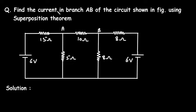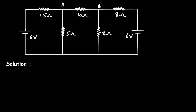Find the current in branch AB of the circuit shown in the figure using the superposition theorem. We have to find the current through branch AB by using superposition theorem. Solution: first of all we will consider the current due to the 6V voltage source.